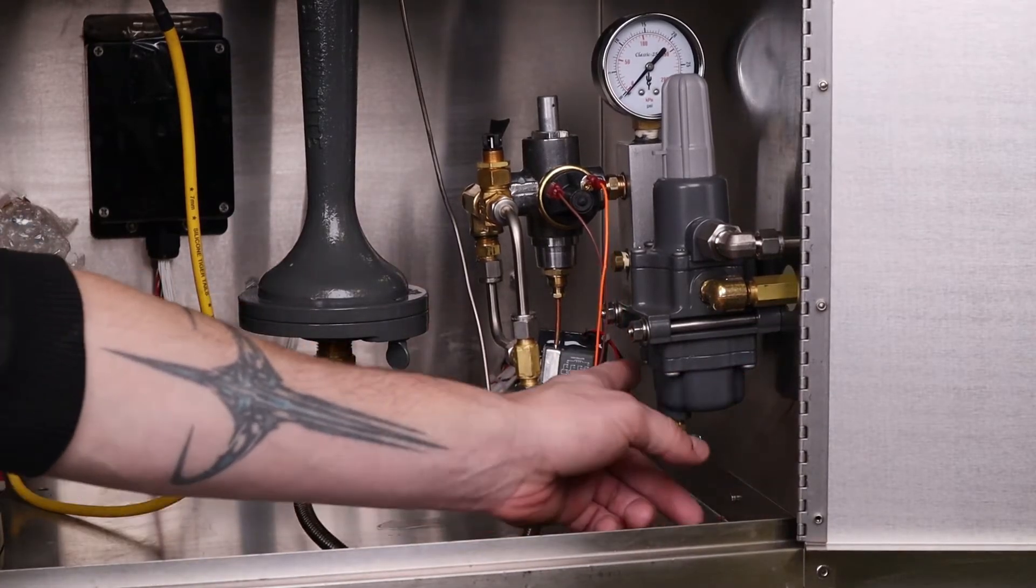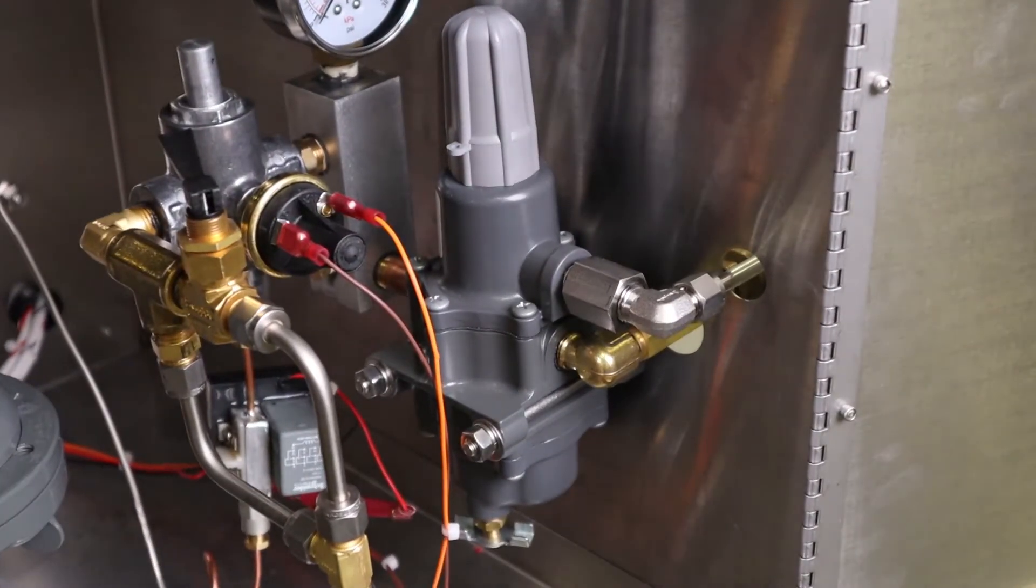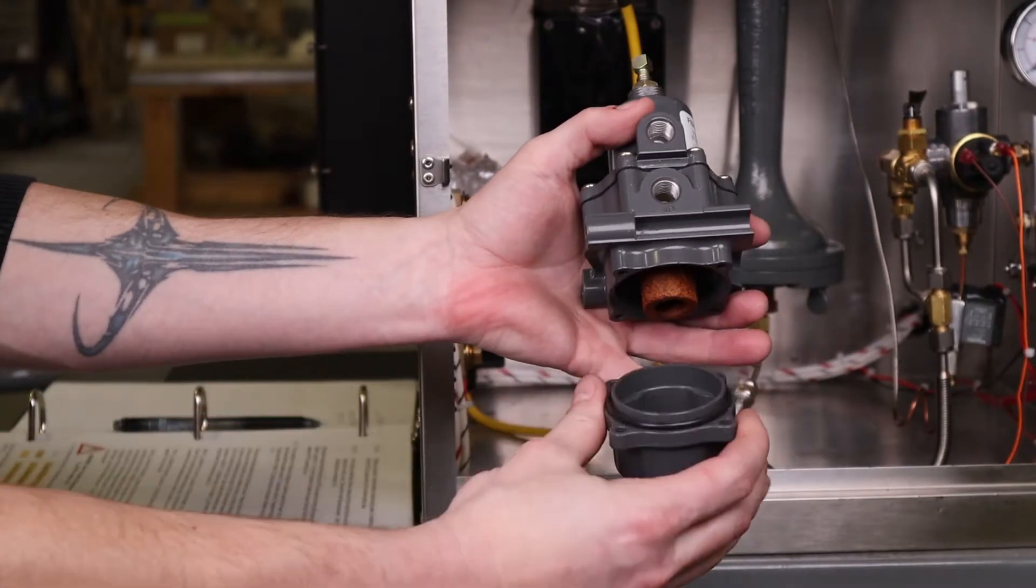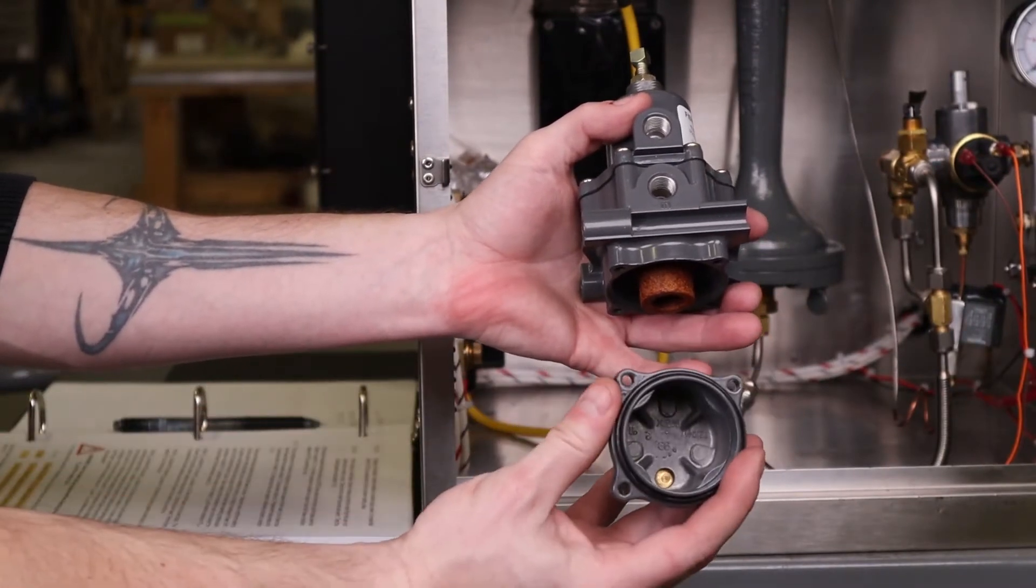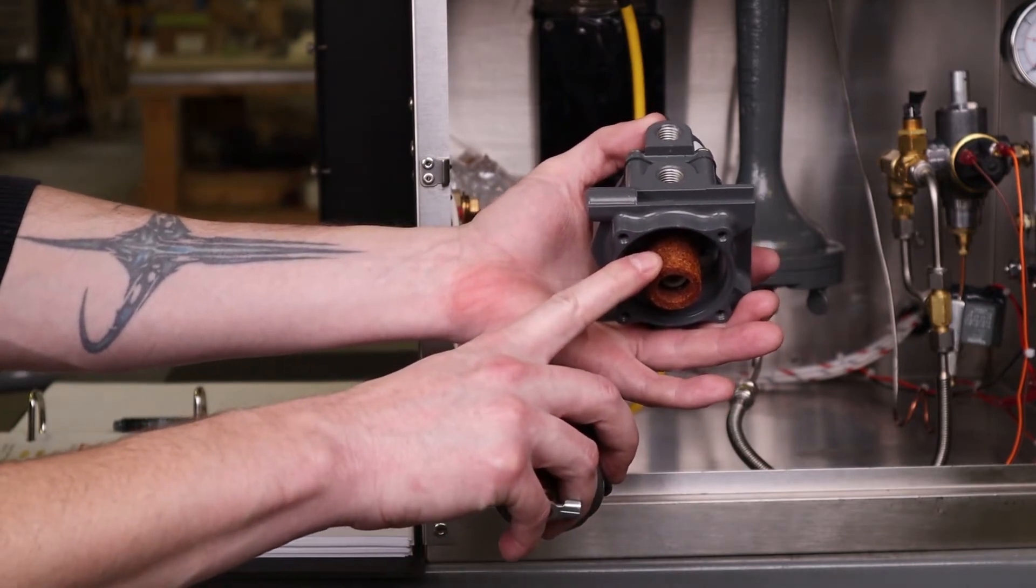Remove the four Phillips head screws and pull off the sediment bowl. After you've removed the sediment bowl, clean out any contents or debris that may be in there and be sure to change the fuel filter.